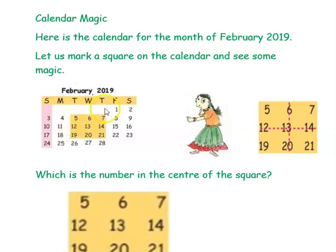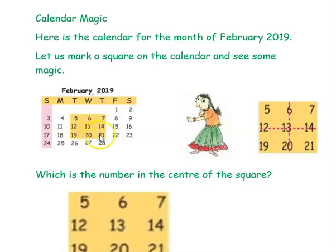They have given a February 2019 calendar and they have marked a square — that is, they have formed a square like this: three numbers here, three numbers here, three numbers here, three numbers here. So they have formed the square here.